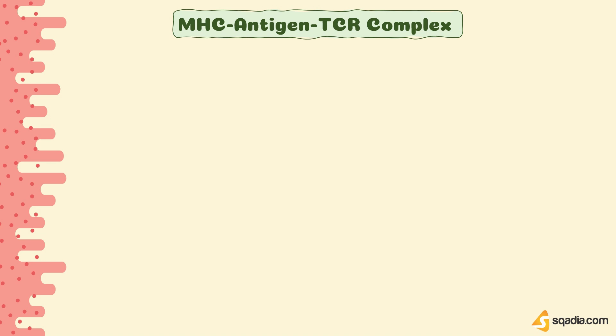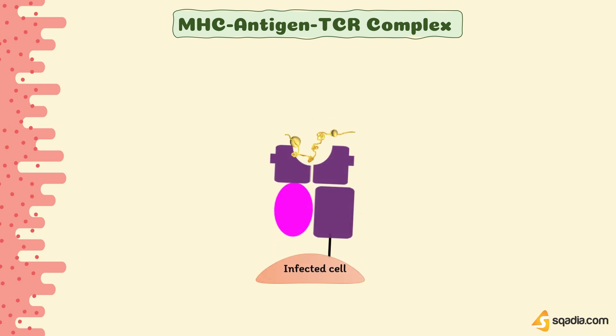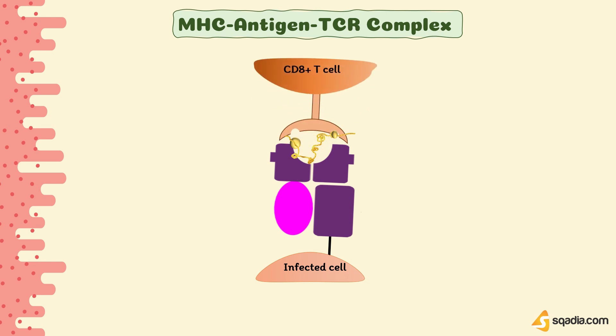For further understanding of MHC restriction, let's look at the model of the MHC-antigen-TCR complex. MHC binds with the peptide or antigen, and then this MHC-antigen complex binds with T cell receptors. This model has three components: the MHC molecule, the antigen, and the T cell. The T cell contacts amino acids from both the MHC class 1 molecule and the peptide antigen. Certain amino acids in the peptide antigen bind to amino acids of the MHC molecule in the peptide binding groove, forming the MHC-antigen complex. Other peptide antigen amino acids protrude out of the MHC groove and interact with the TCR.